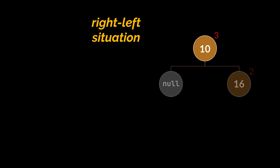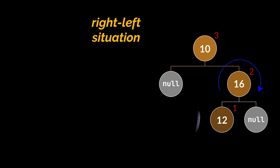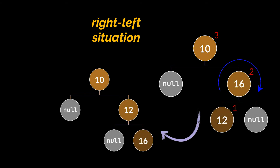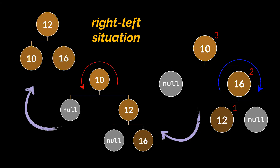The fourth case is the right-left situation, symmetric to the third. Here we apply a right rotation on the right child of the subtree's root, placing us in a right-heavy situation, then solve it with a left rotation on the root. In this case, the root's balance is minus 2 and the right child's balance is plus 1.